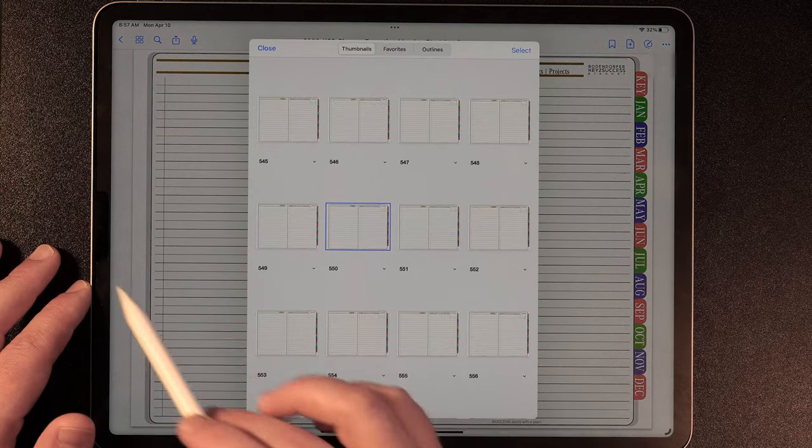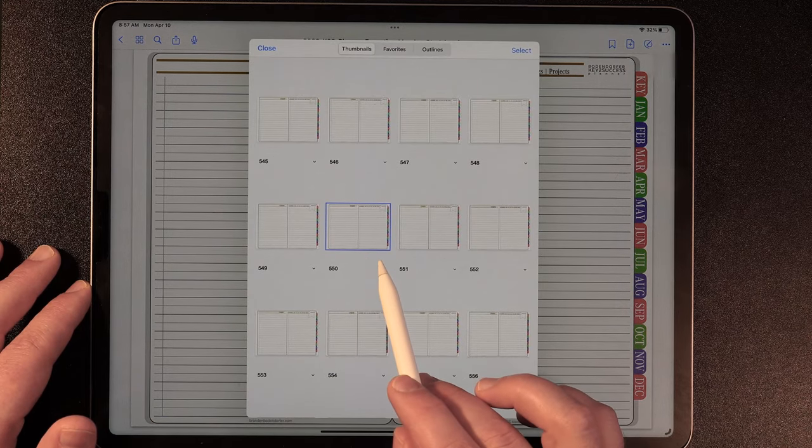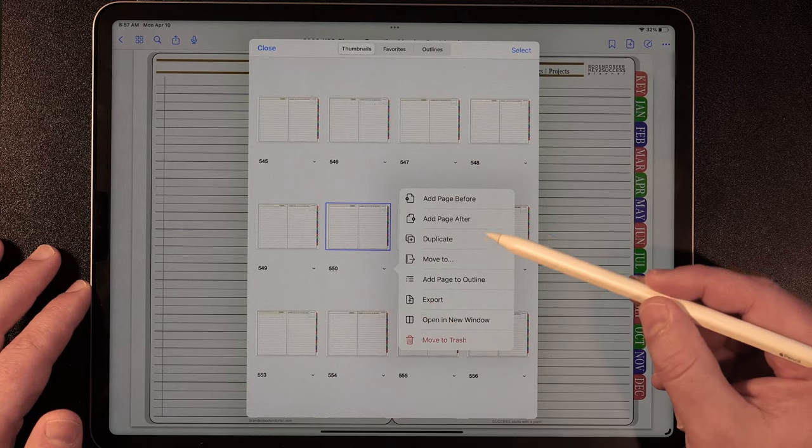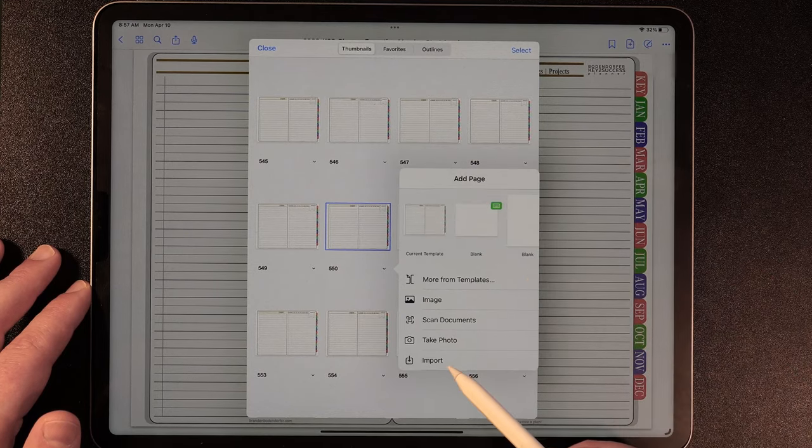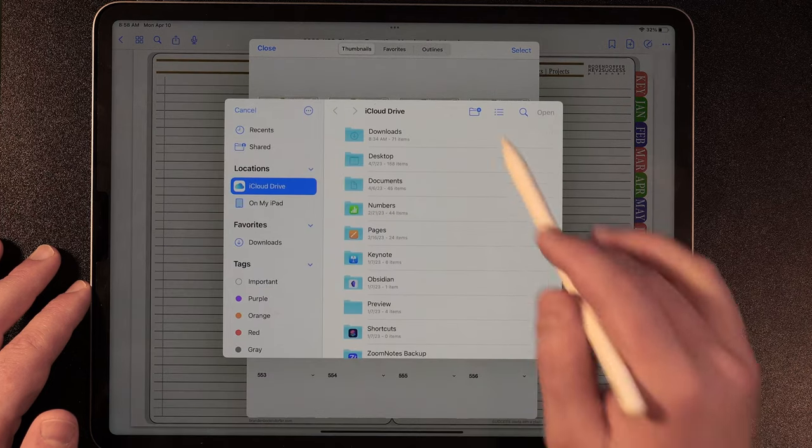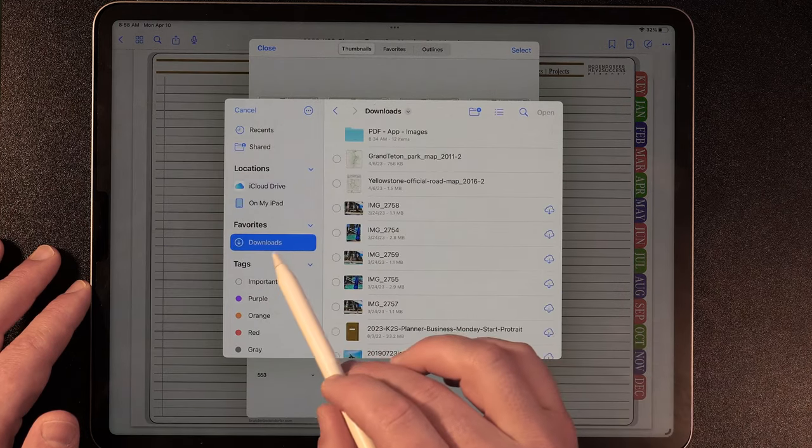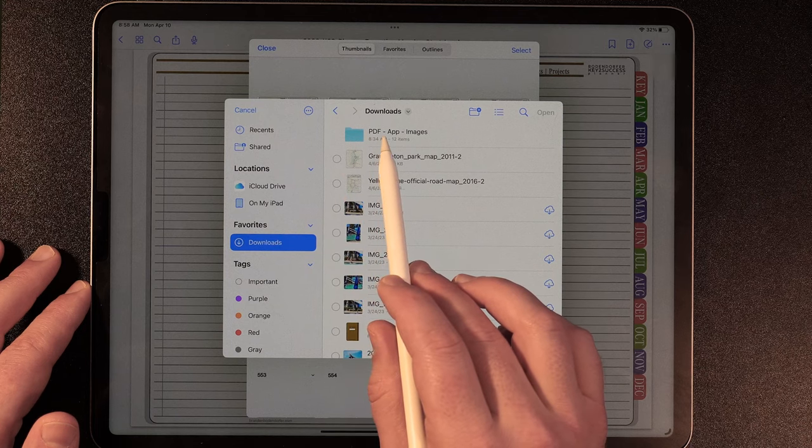It's going to take me to this page. Now I'm going to click on the page sorter icon and it's going to highlight the page that I'm currently on. I'm going to click on the drop down arrow and click add page after. And then from here I'm going to hit import. And this is going to bring up my file browser.